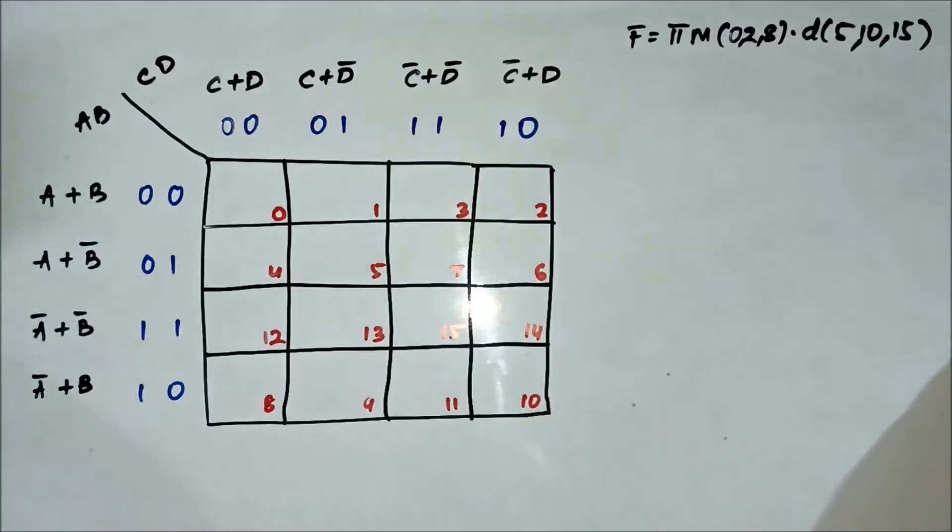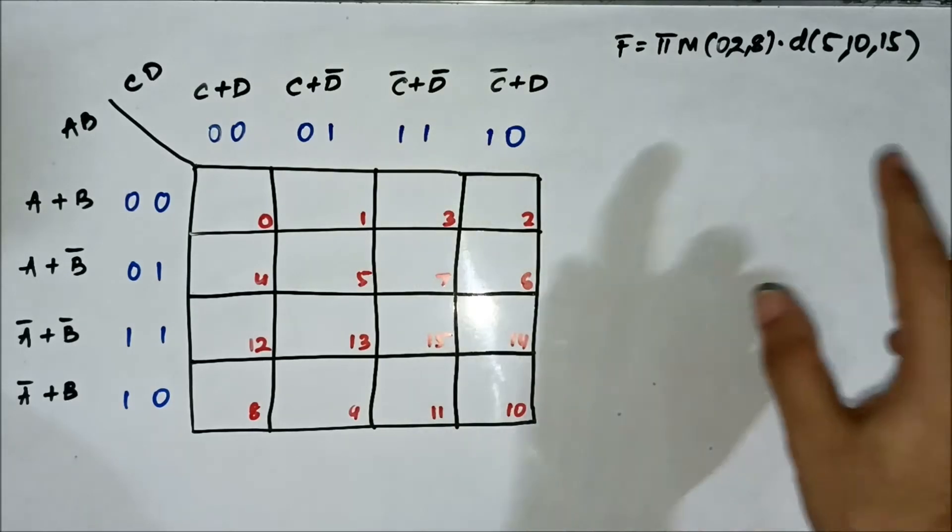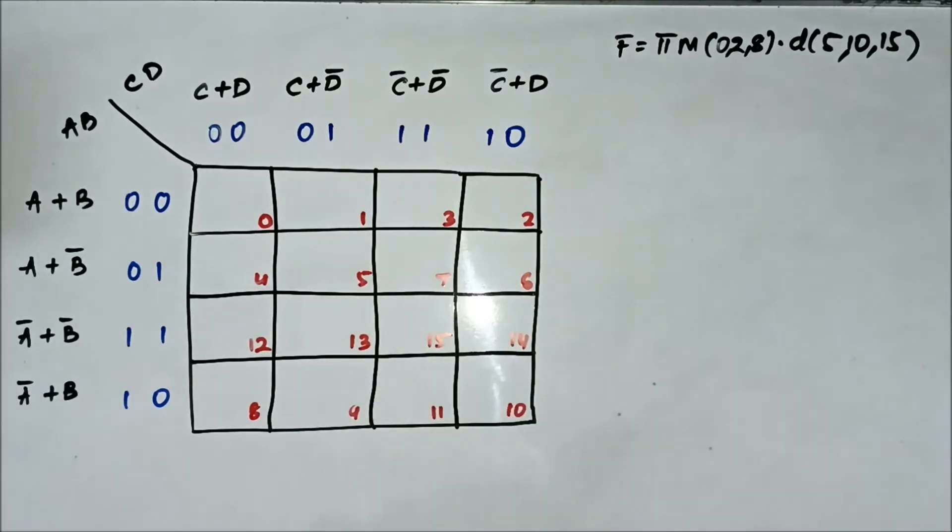Here we have the POS expression given in terms of the max term values and the don't care values. The same process will map the values then form the groups and then identify the common variables.